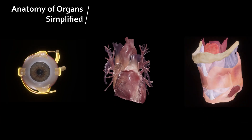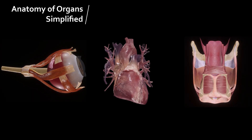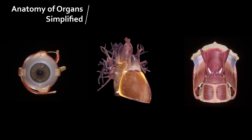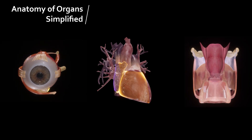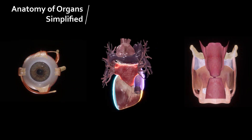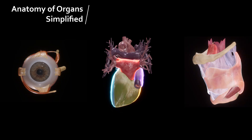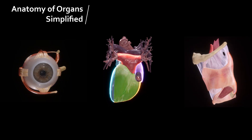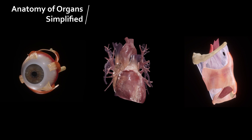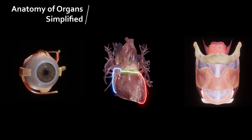Dissection involves a systematic study of a dismembered body to gain detailed insights into the anatomy of organs and their associated structures. You can explore the anatomy of organs like the heart, brain, lungs, eyes, ears, kidneys, and many others, witnessed like never before.